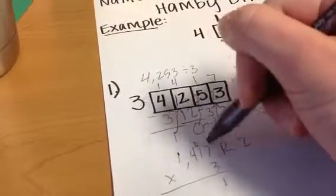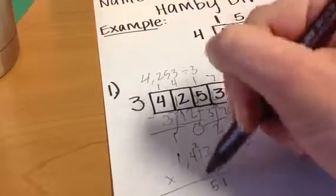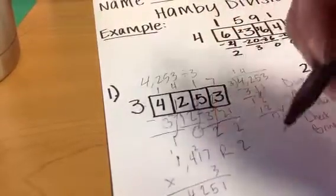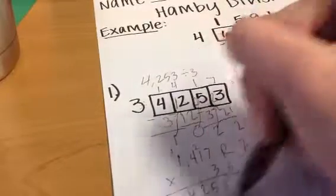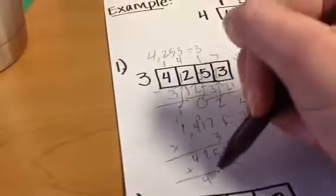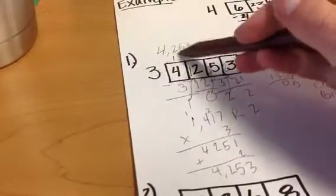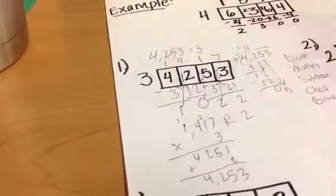So when they multiply it, they're going to get 4,251. So they're going to have to add the remainder in. And then they get 4,253, which was our dividend where we started with. So that's how they know they're correct.